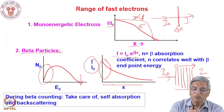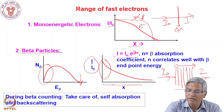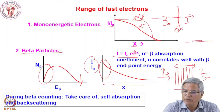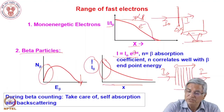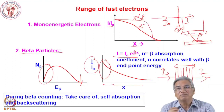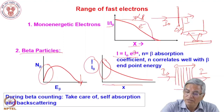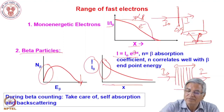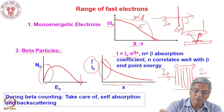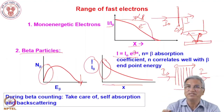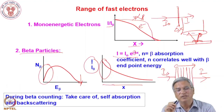Beta counting requires care regarding attenuation. If you have a sample on a plate in a detector, the beta particles travel from sample to detector. If the backing material is high-Z — like lead, stainless steel, or tantalum — there will be backscattering. Additionally, there is self-absorption in the precipitate, and if the material is high-Z, Bremsstrahlung can also occur. Therefore, when doing beta counting, one must not use high-Z backing material.